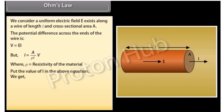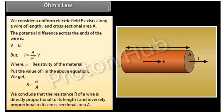Putting the value of I in the above equation, we get the value of resistance which is equal to ρL upon A. We conclude that the resistance R of a wire is directly proportional to its length L and inversely proportional to its cross-sectional area A.